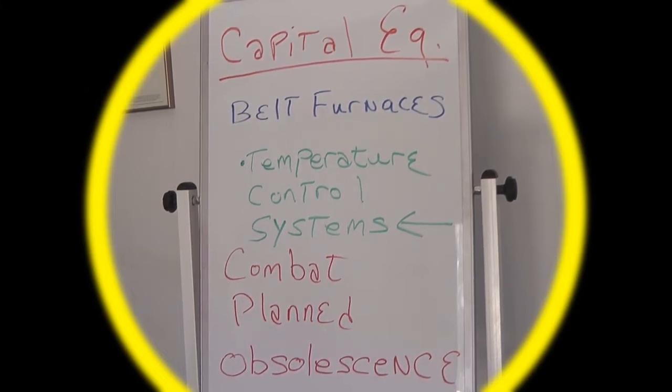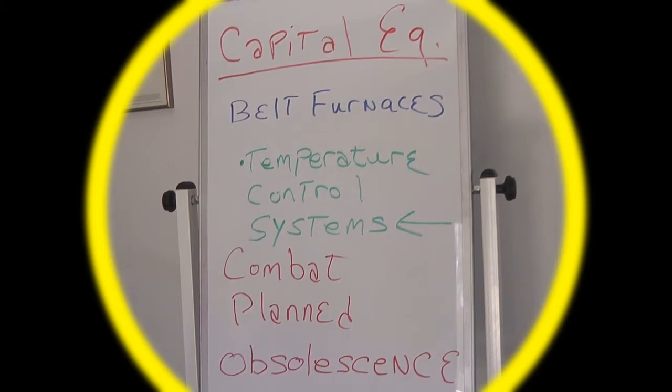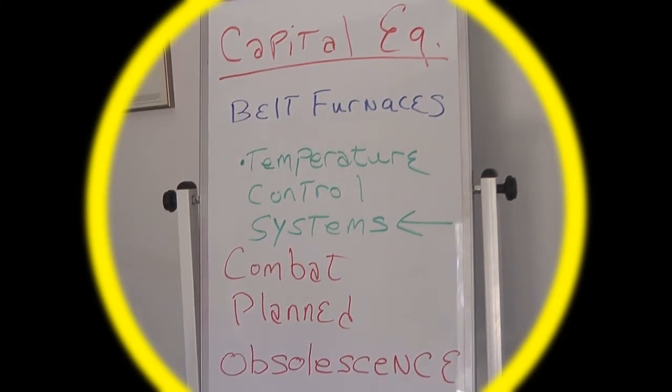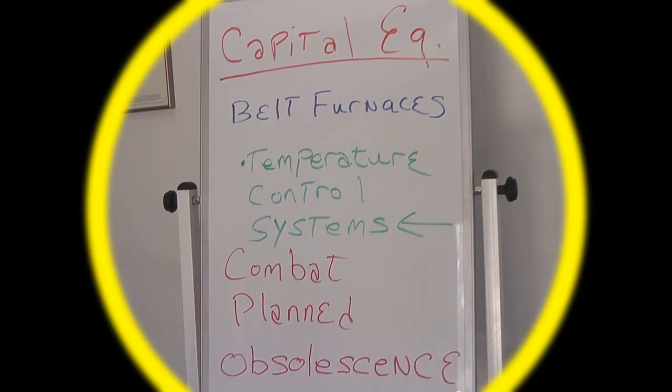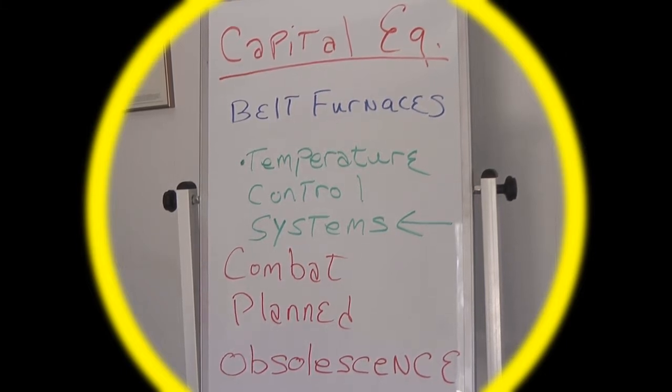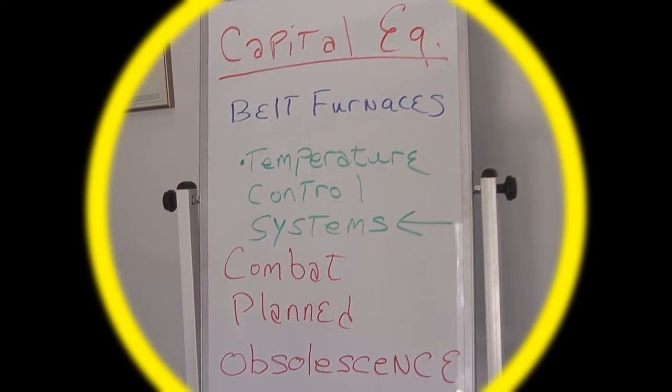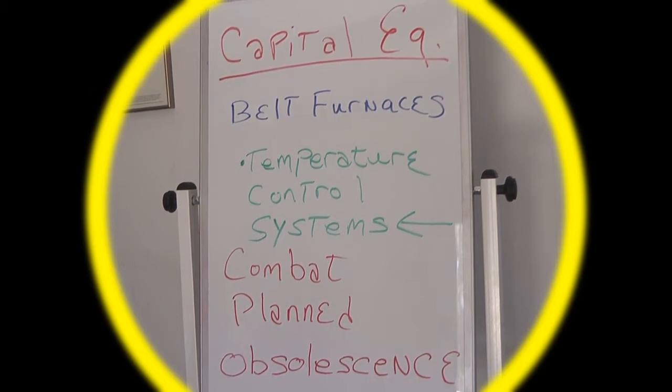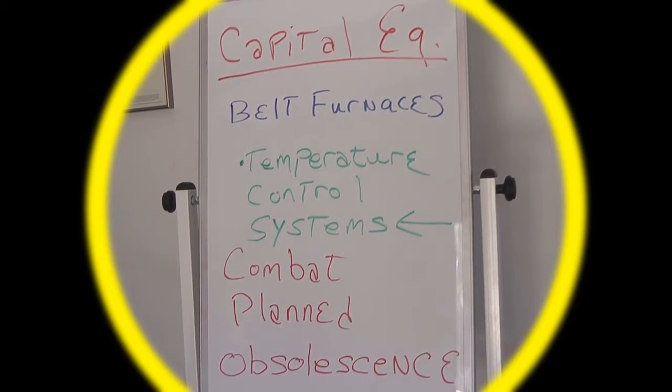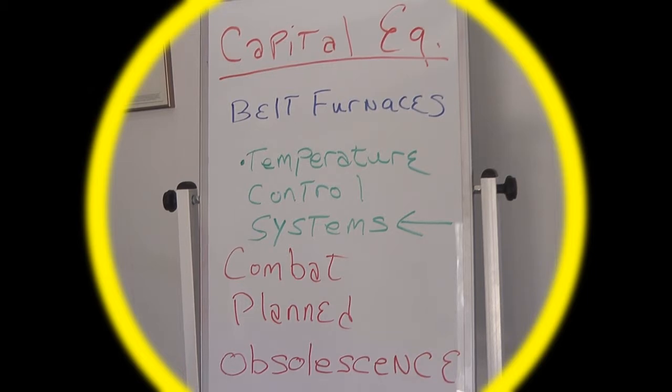Sometimes the cost-benefit analysis gets done and it turns out that by replacing the temperature control system on the furnace, you might extend its useful life for another 10 years. And that's a good way that you can combat the planned obsolescence that some of the furnace manufacturers have had in mind for the last 20 years or so.